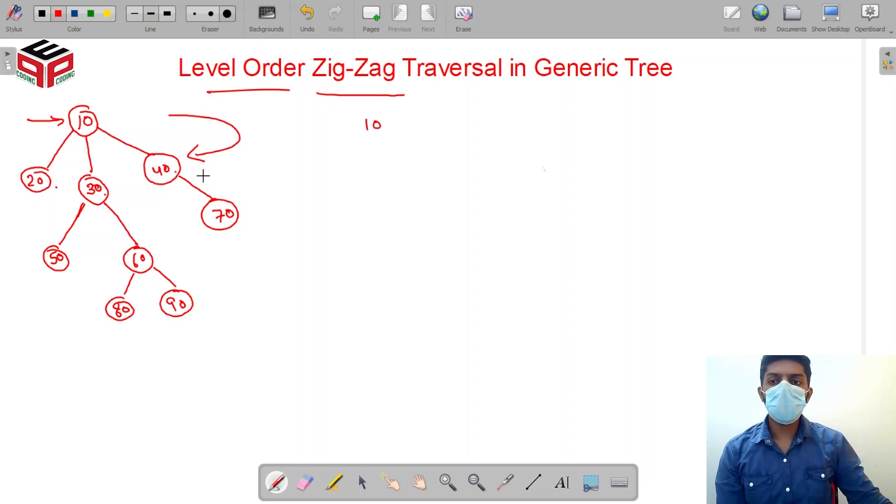After that, as this level is traversed from right to left, we need to traverse this level from left to right, so 50, 60, and 70, and in the reverse order now 90 and 80.